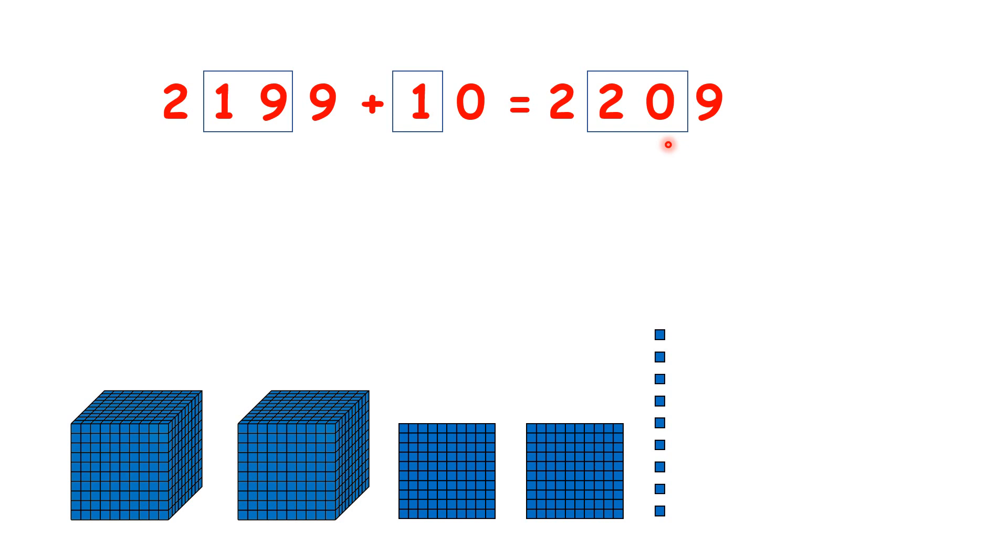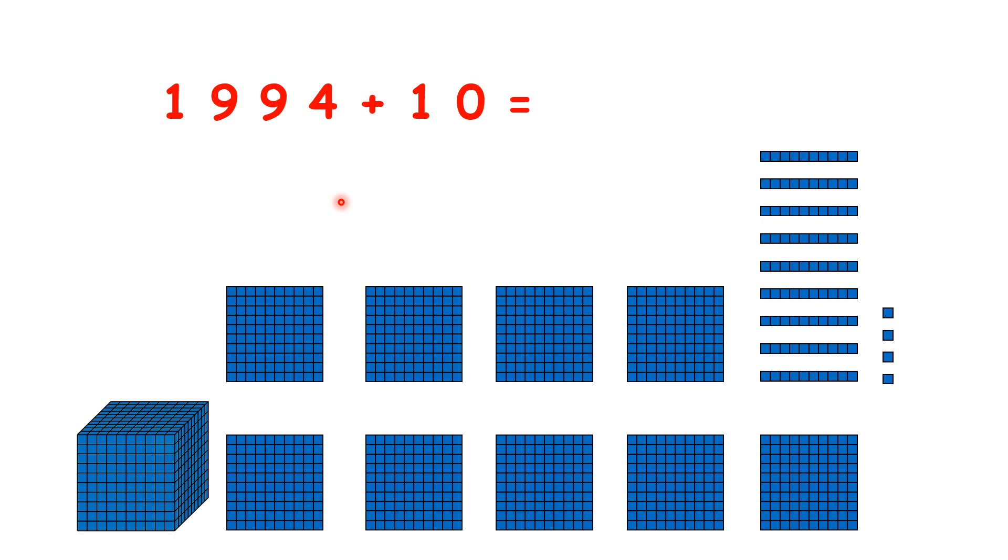This is confusing, so let's look at another example. We have 1,994 plus 10. Again, we already have 9 tens, and we want to add one 10. In our last question, we counted the hundreds column as tens, but this won't work here because we can only have one digit in each place value column. 99 is 2 digits, but if we add 1, we get 100, which is 3 digits.